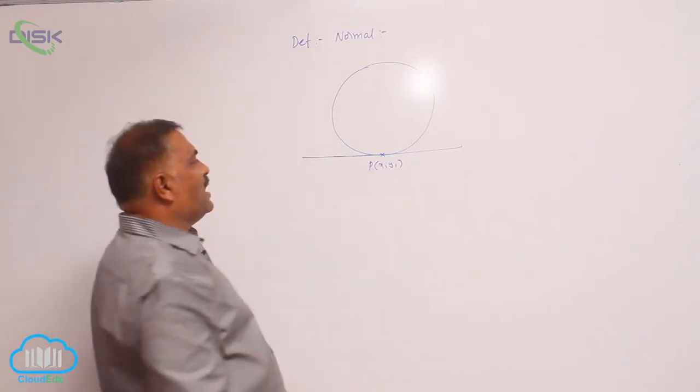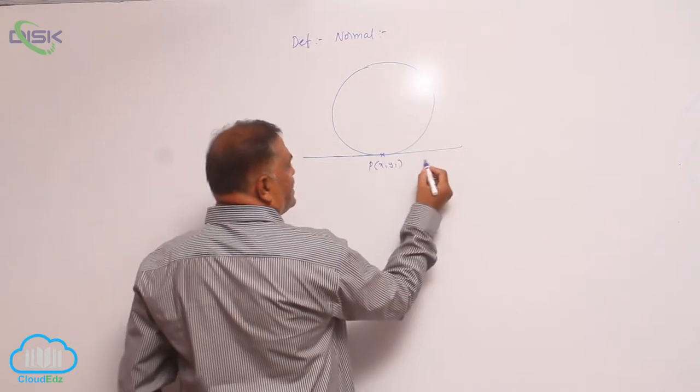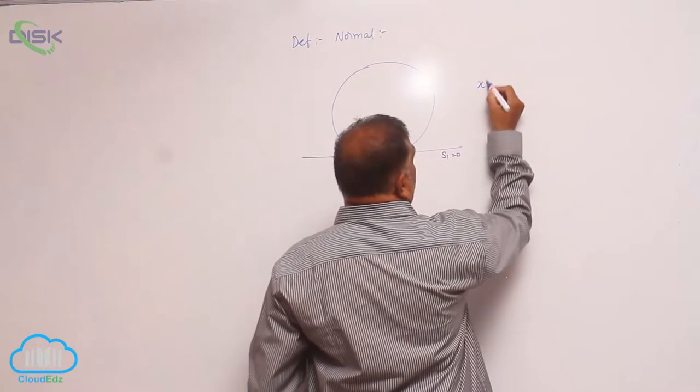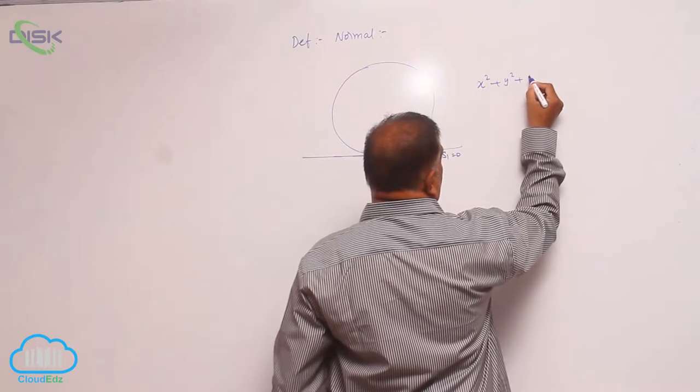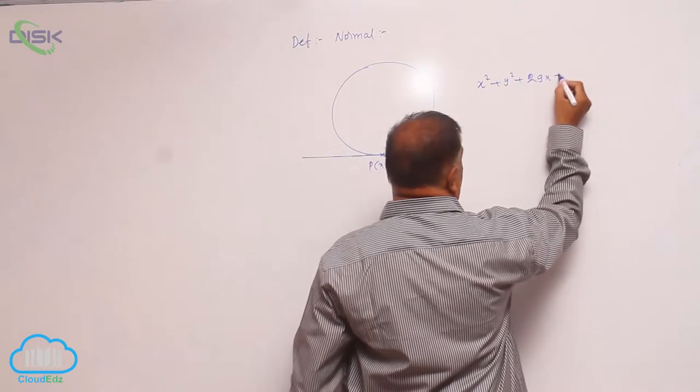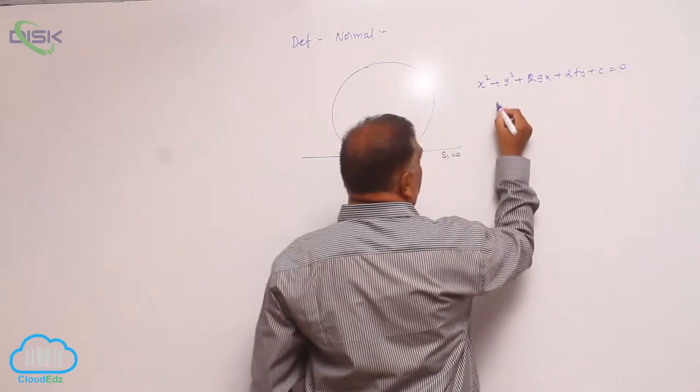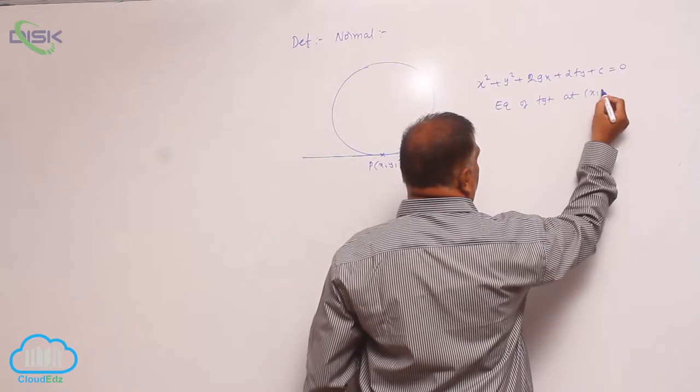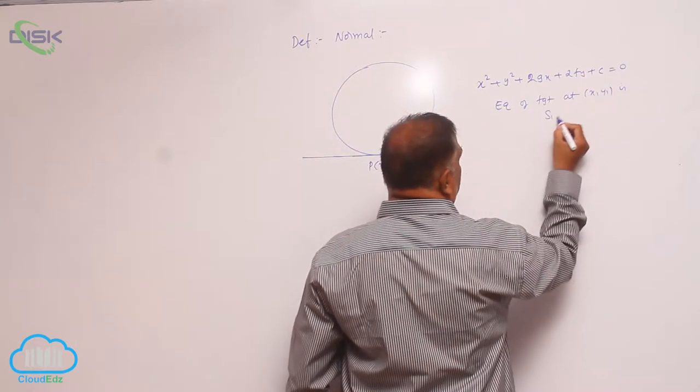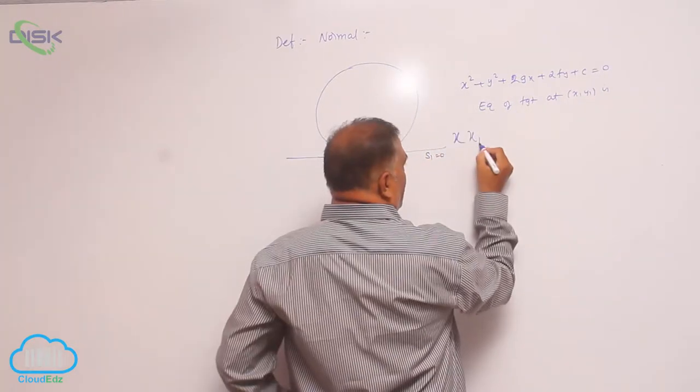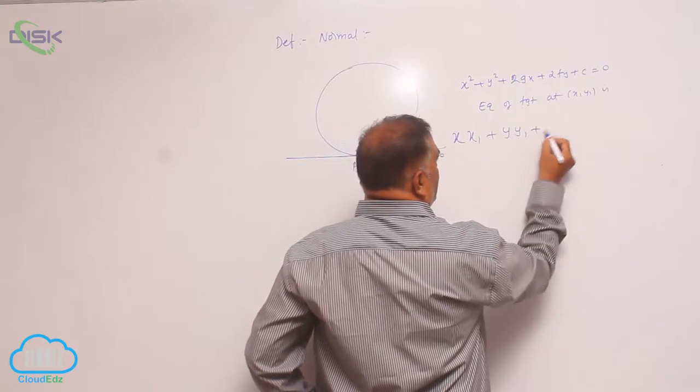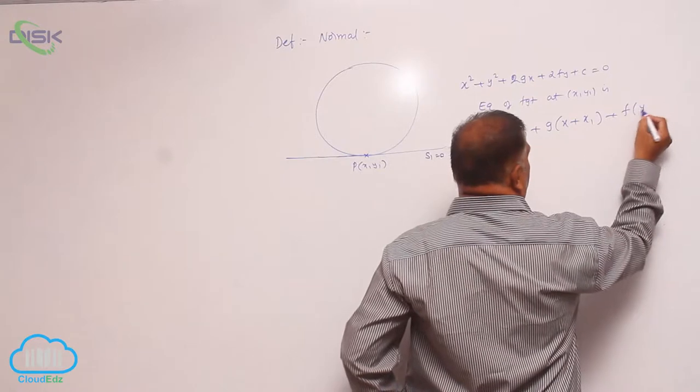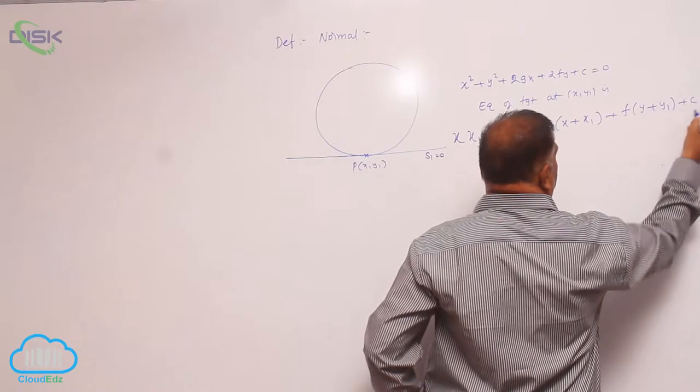At point P(x₁, y₁), you know that this is S₁ equal to 0. What is S₁ equal to 0? For circle equation x² + y² + 2gx + 2fy + c = 0, the equation of tangent at (x₁, y₁) is S₁ = 0: xx₁ + yy₁ + g(x + x₁) + f(y + y₁) + c = 0.